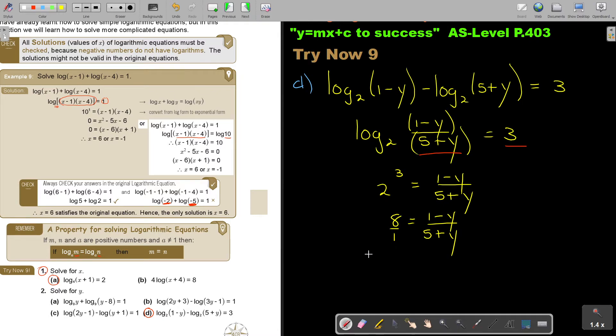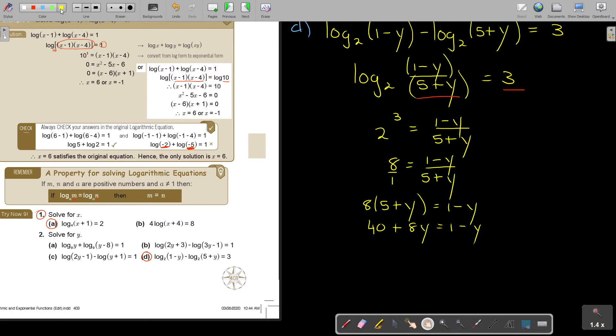So, if I swap. 2 to the power 3 equals 1 minus y over 5 plus y. The 2 to the power 3 is 8. It's 1 minus y over 5 plus y. And then, I'm going to cross multiply. So, I'm going to get 8 times 5 plus y equals, if I multiply that, 1 minus y.